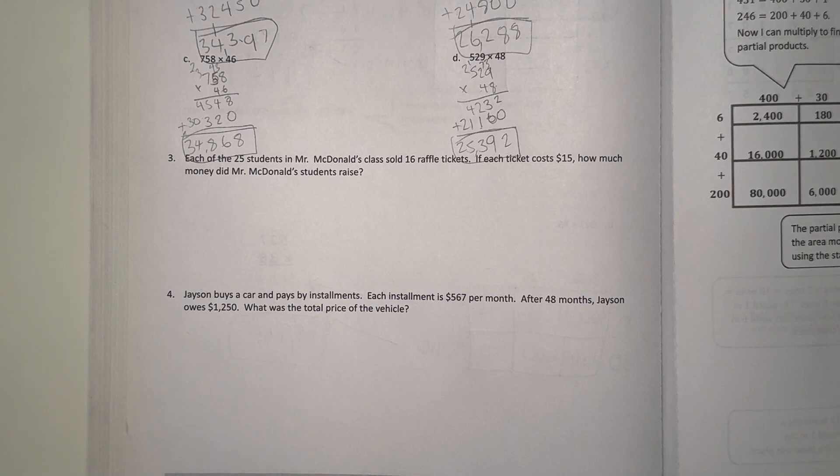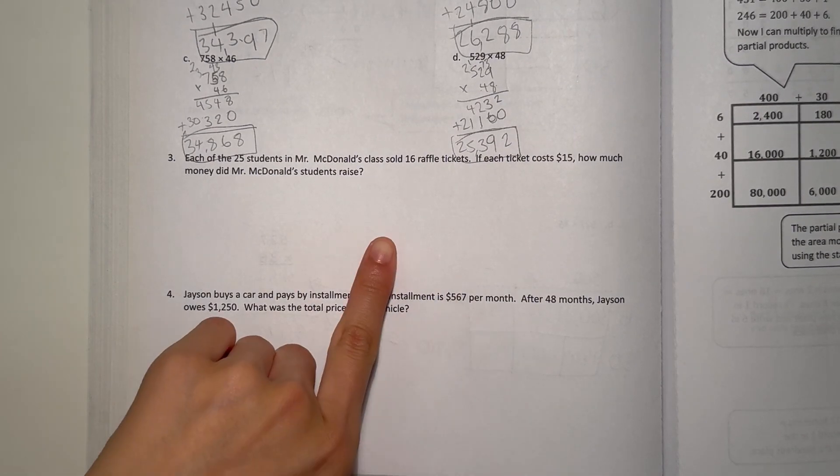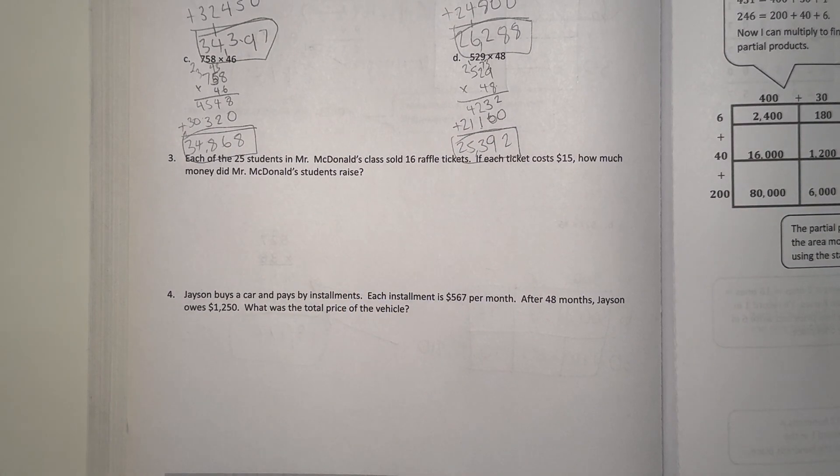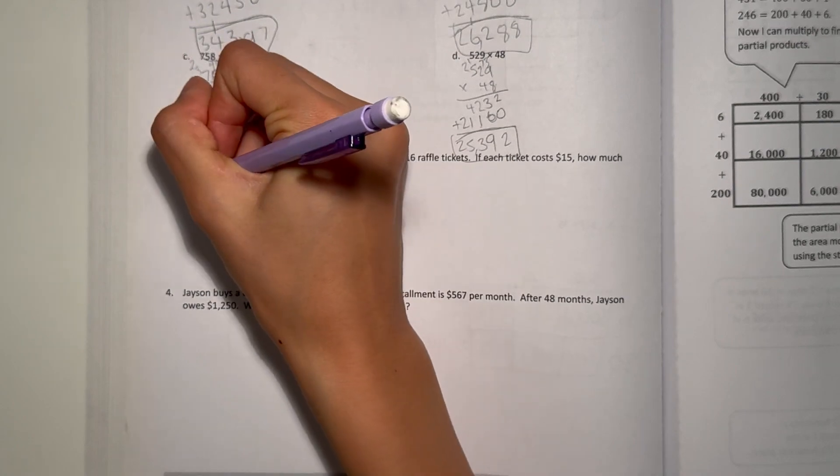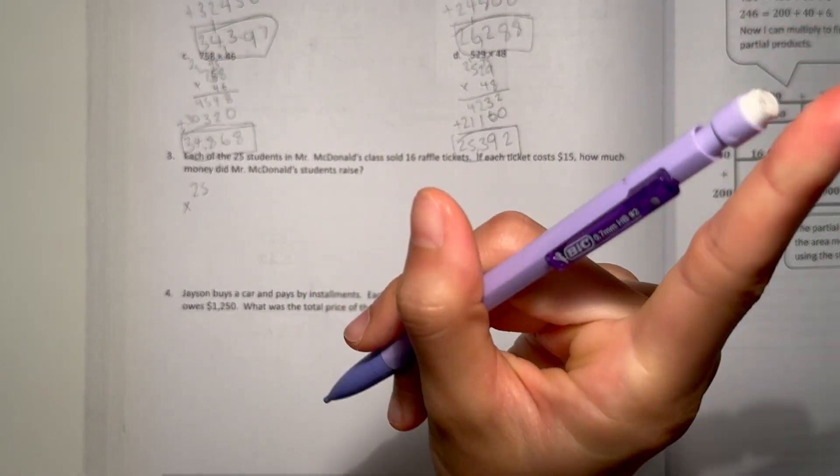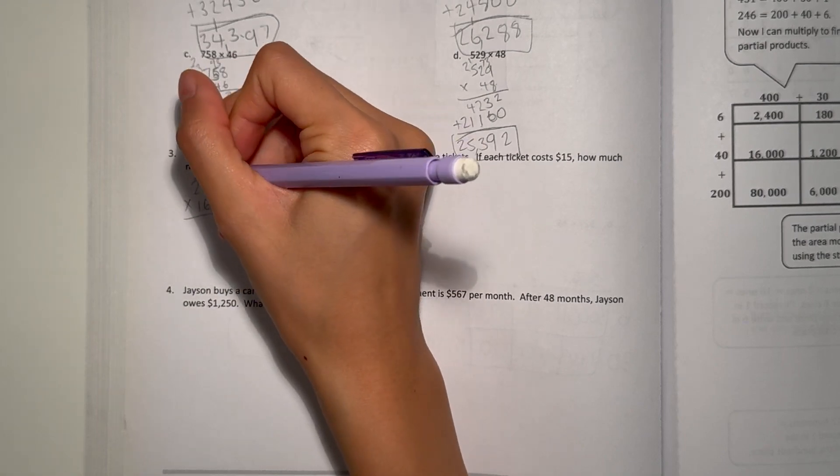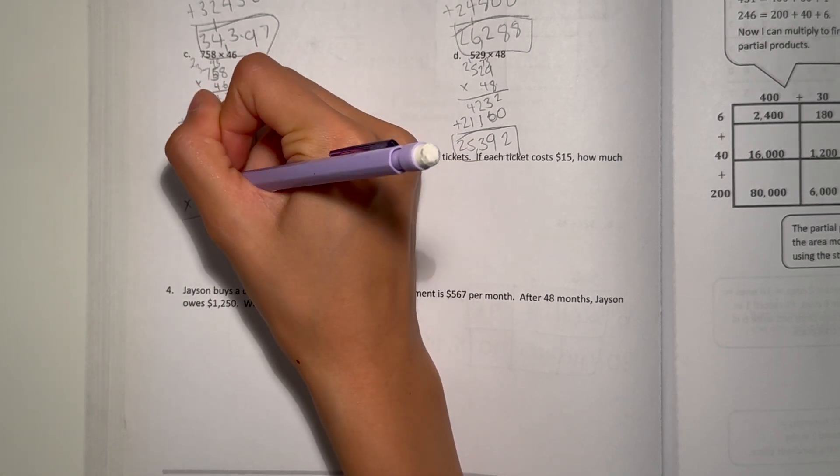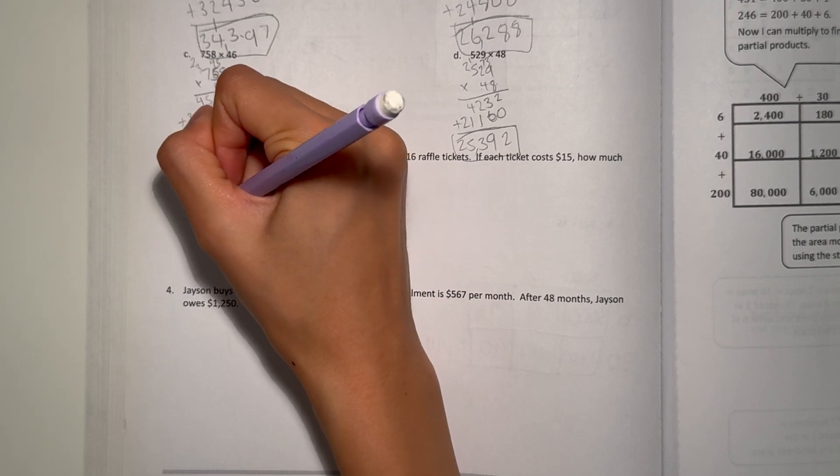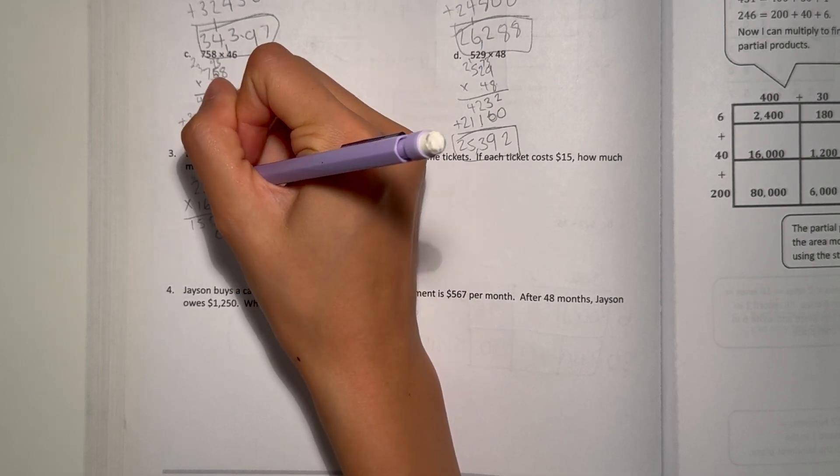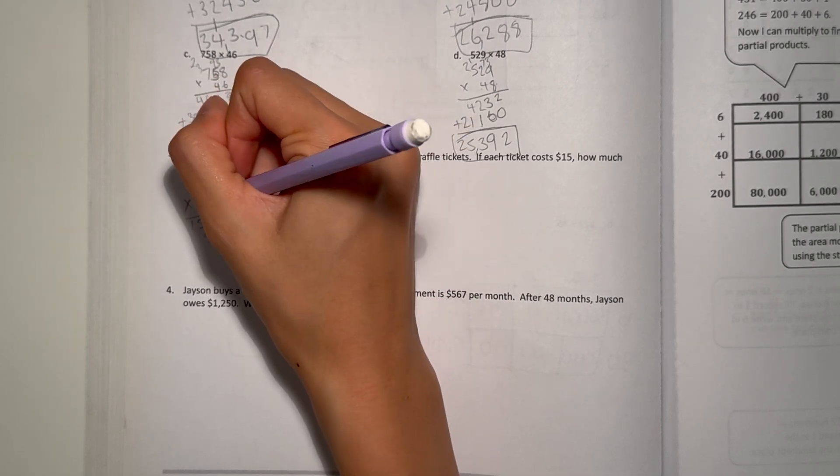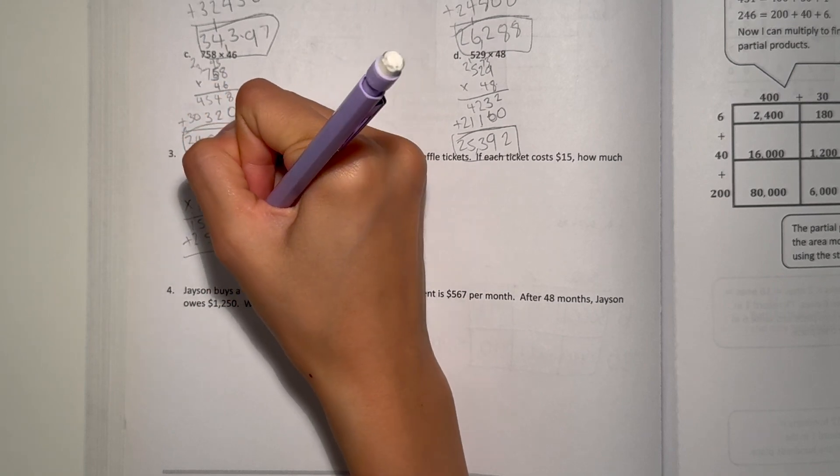Alright, so 25 students and each sold 16 raffle tickets. Now we know the price of each ticket, but the first thing we need to do is how many total raffle tickets did they sell? 25 times 16. 5 times 6 is 30. 2 times 6 is 12 plus 3 is 15. Add a 0. 5 times 1 is 5. 2 times 1 is 2. Now let's add.